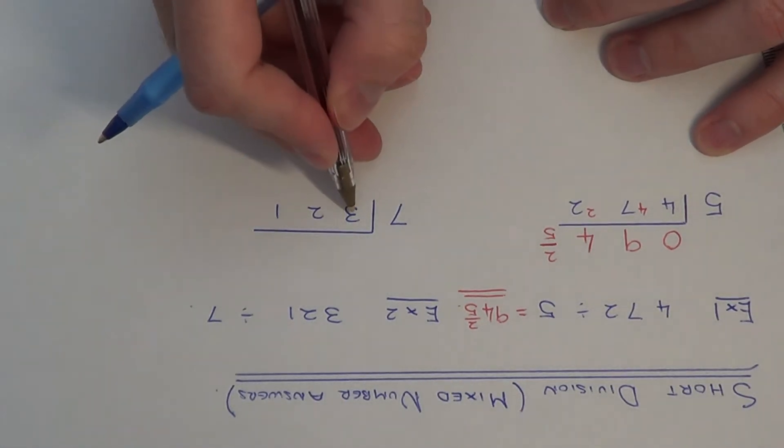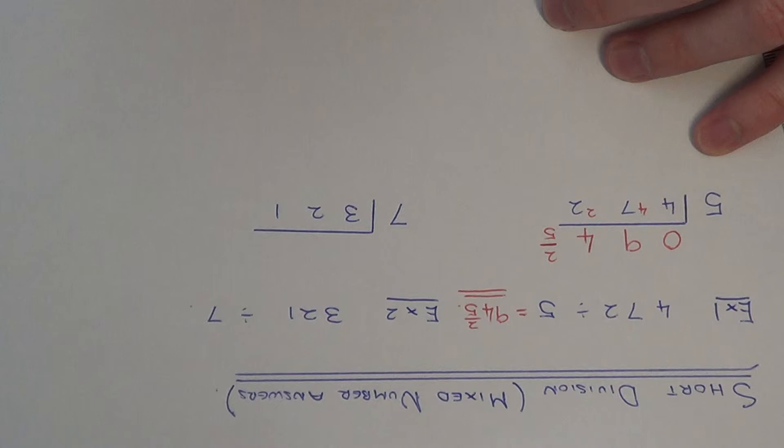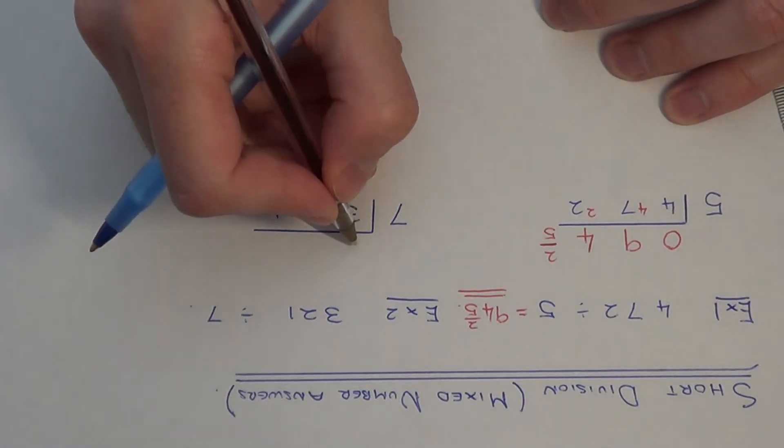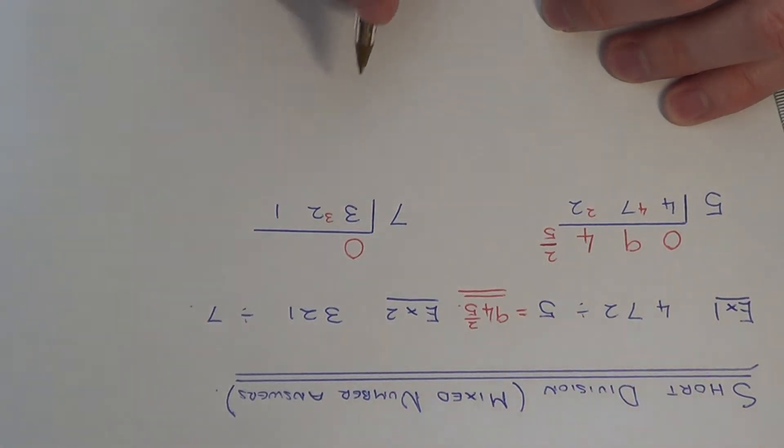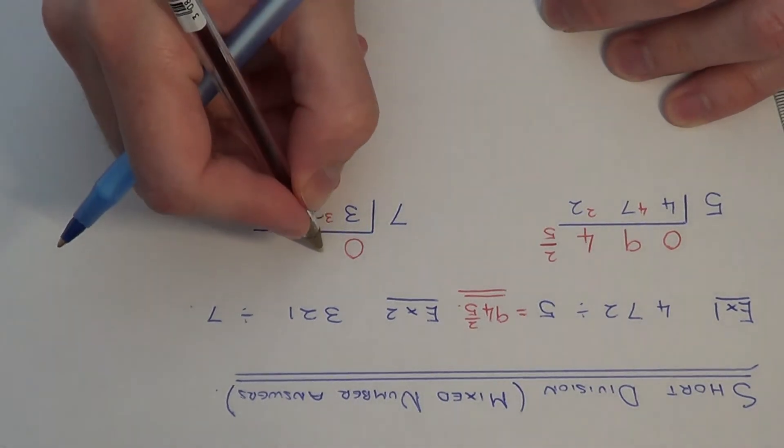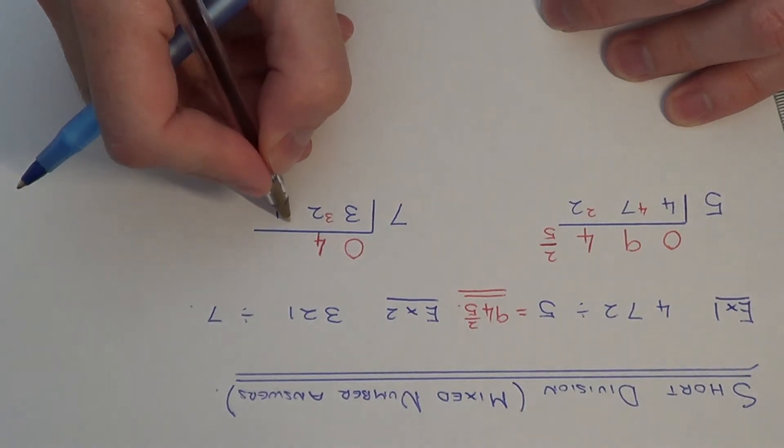So first of all we have 3 divided by 7. Again we can't do this, so we're going to put 0 remainder 3. Next we have 32 divided by 7. This goes 4 times and the remainder is 4.